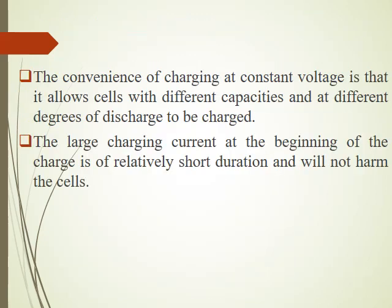The advantage of constant voltage charging is that cells or batteries with different capacities and different degrees of discharge can be charged together by connecting the batteries in parallel. Since the voltage across the batteries remains the same, each battery draws current according to its ampere hour capacity. The disadvantage is that at the start, a large amount of charging current is drawn by the battery — however, practically speaking, this large current flows for a very short duration, so it doesn't harm the battery.